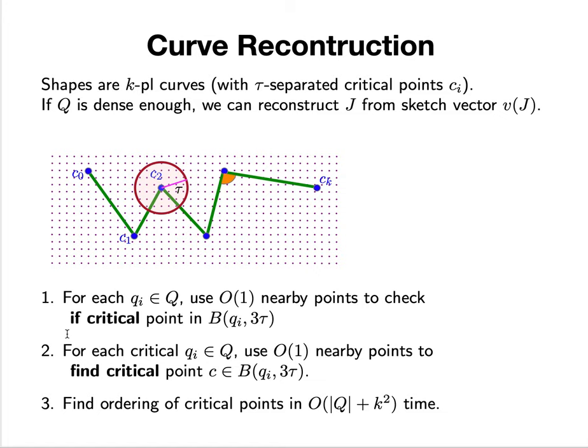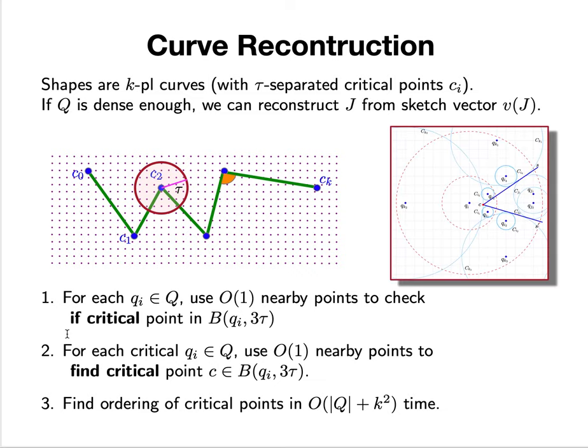It's not approximately recovered - we can recover it exactly. The algorithm is fairly simple. For each landmark point q, we can check using a constant number of neighbors if it's near one of the critical points.